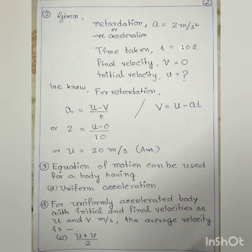For retardation, we use V equals U minus AT or A equals U minus V by T. Substituting the values — A equals 2, V equals 0, T equals 10 seconds — the initial velocity U equals 20 meter per second. Now, our third question: equations of motion can be used for a body having — the answer is option C: uniform acceleration.